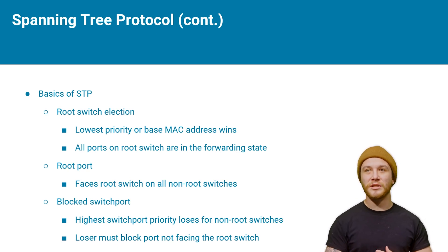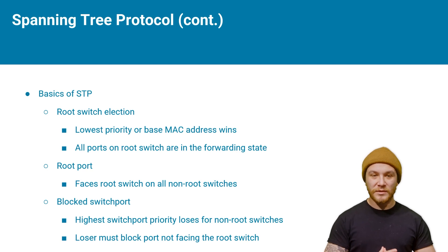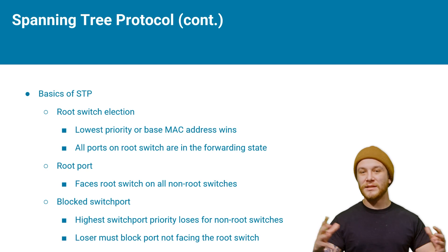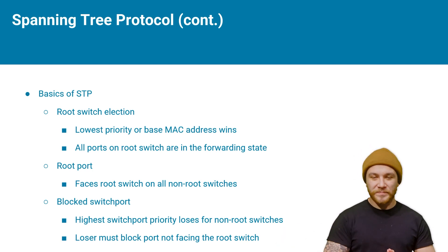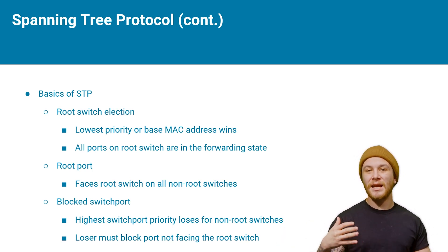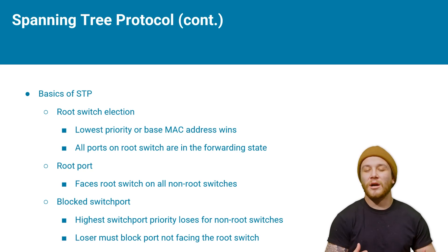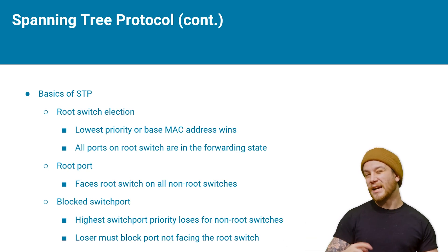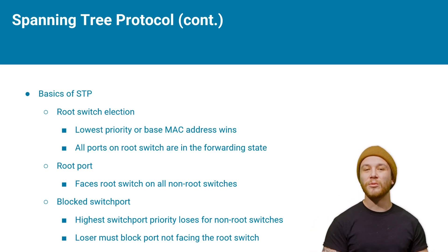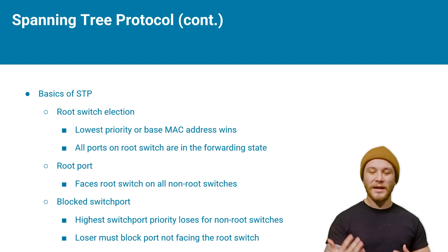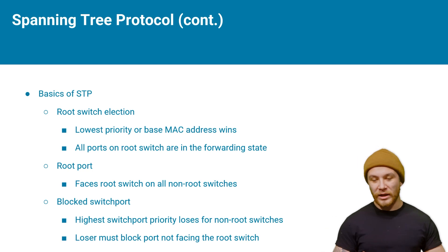Typically if priorities are the same default value — around 32,000 — it falls to the highest interface MAC address. The switch with the higher MAC address will block its port, because the lowest MAC address wins not only for root election but also for deciding which port gets blocked. Only one interface in that entire spanning tree loop is going to block, essentially turning off that link — almost like unplugging the cable.